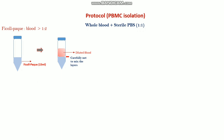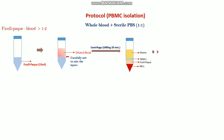The Ficoll-Paque to blood ratio should be approximately 1:2. After this, centrifuge at 400g for 20 minutes without any brake. After centrifugation, very carefully take out the tube and you will notice different components forming layers: first the plasma on top, then the PBMC layer, then the Ficoll-Paque, and at the bottom the RBCs.